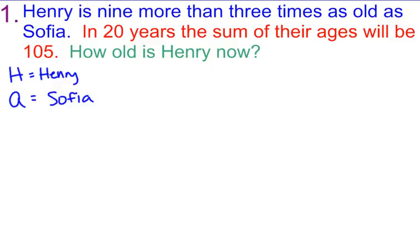So now I have Henry and Sophia. Henry is... So let's start writing that sentence. Henry is nine more than three times as old as Sophia. So three times Sophia. That's not bad, right? Henry is nine more than three times as old as Sophia. There's my equation.